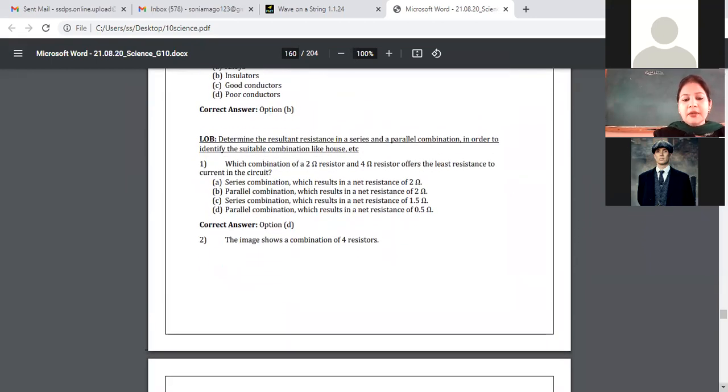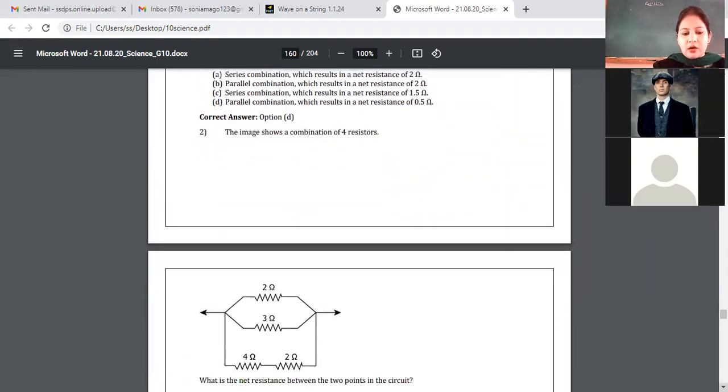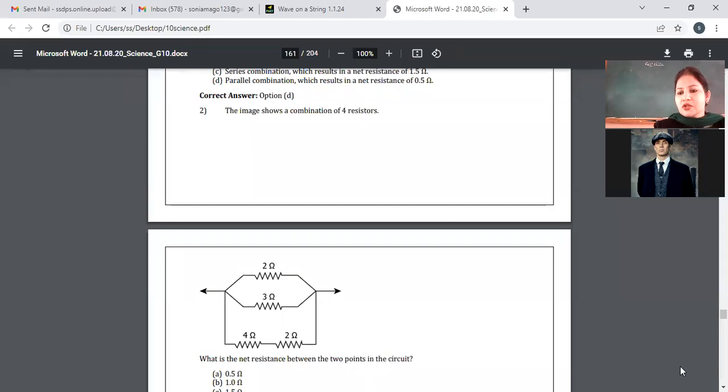The image shows a combination of 4 resistors. Next question: What is the net resistance between 2 points in the circuit? Suppose options are not given to you. Only just see the question.